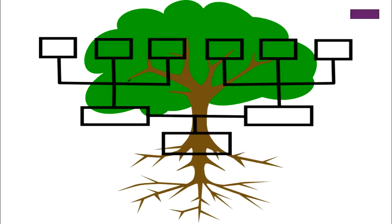Now let us talk about trees. The picture itself tells us this is a tree. What topics can be taken up? We can discuss fruits from trees — mango, oranges, and many more. Or what types of trees are around us, or what the parts of a tree are. By giving the context we can talk about many things related to the word 'trees'.